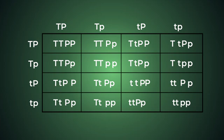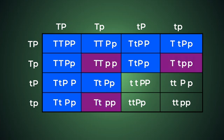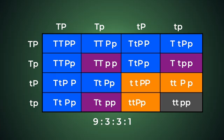For each box within the Punnett square, we're going to bring down the alleles from the parent at the top and bring over the alleles from the parent at the side. This gives us all the possible genotypes of the offspring that could result from this combination of gametes. When we tally up the phenotypic results, you're going to see that out of 16 plants, on average 9 will be tall with purple flowers, 3 will be tall with white flowers, 3 will be short with purple flowers, and 1 will be short with white flowers.